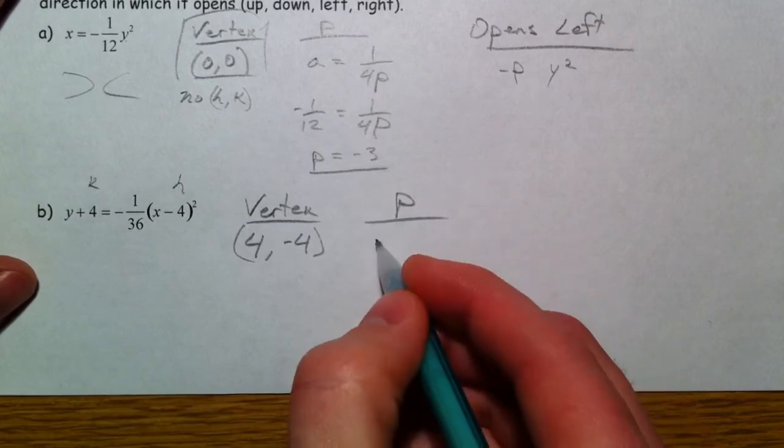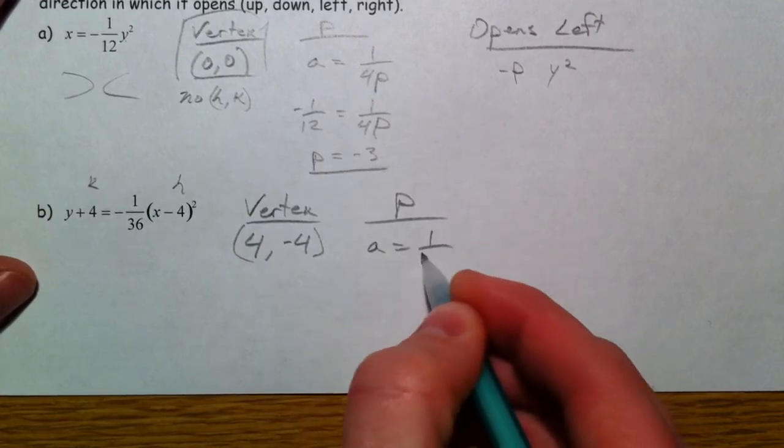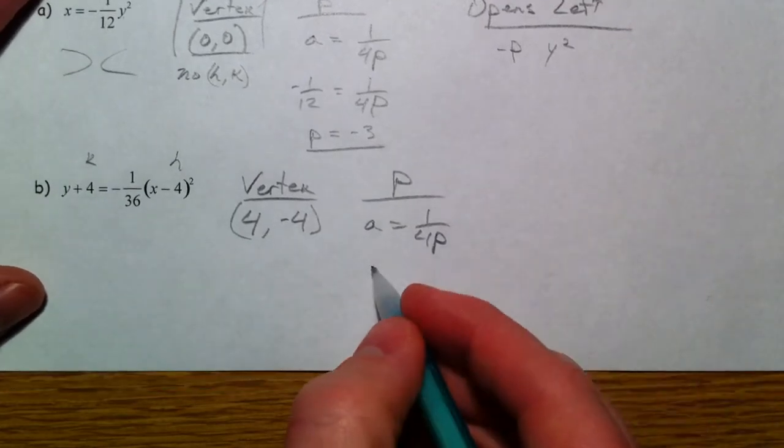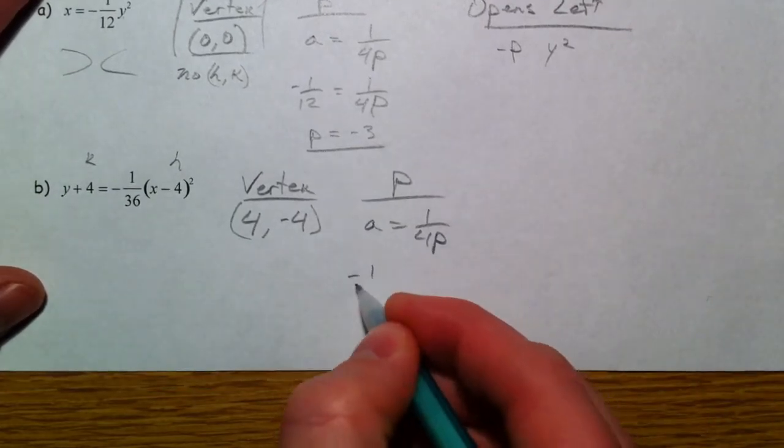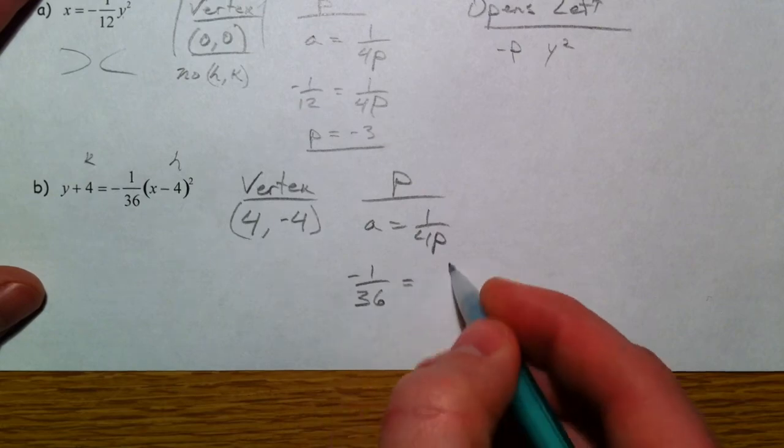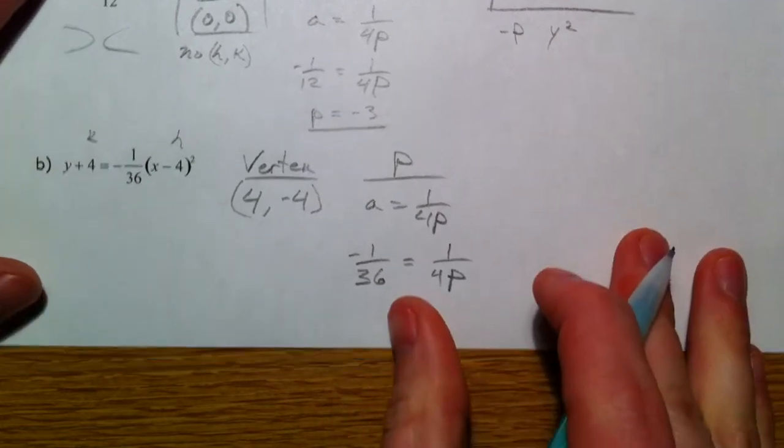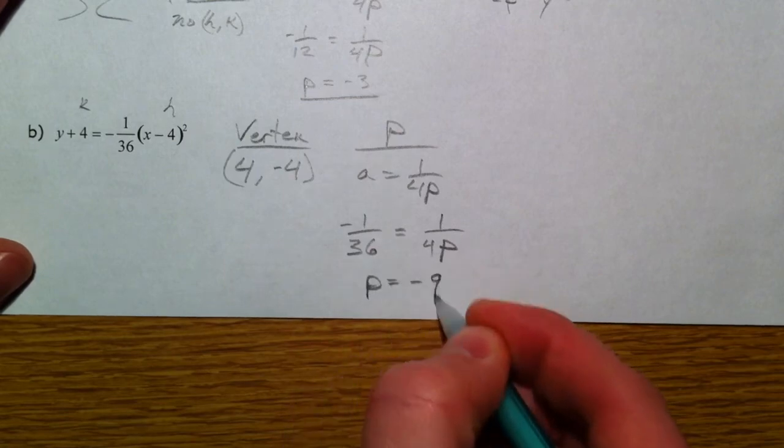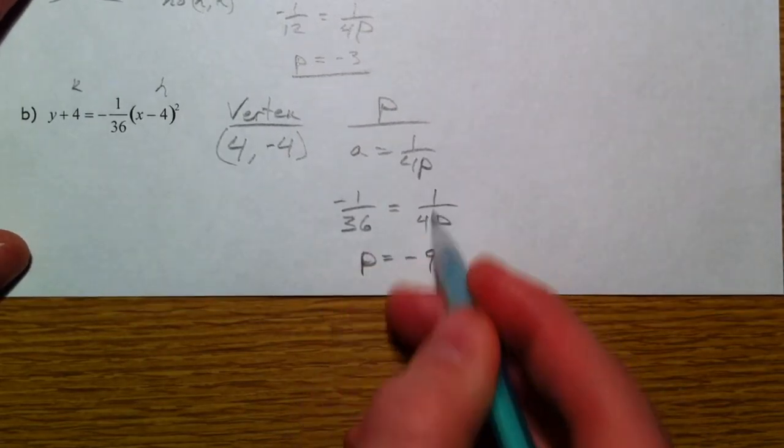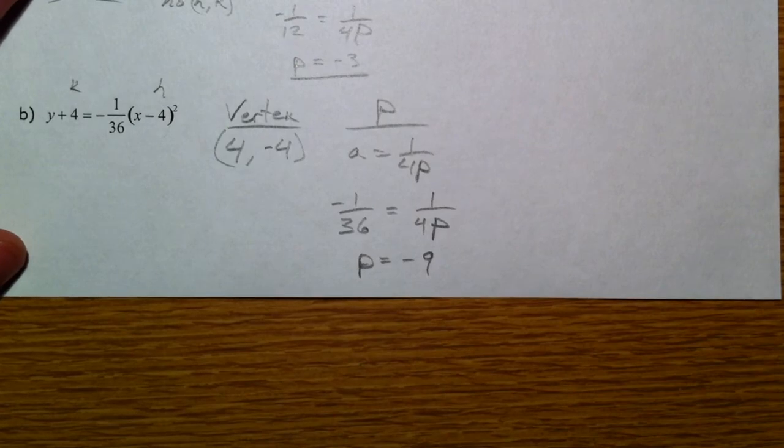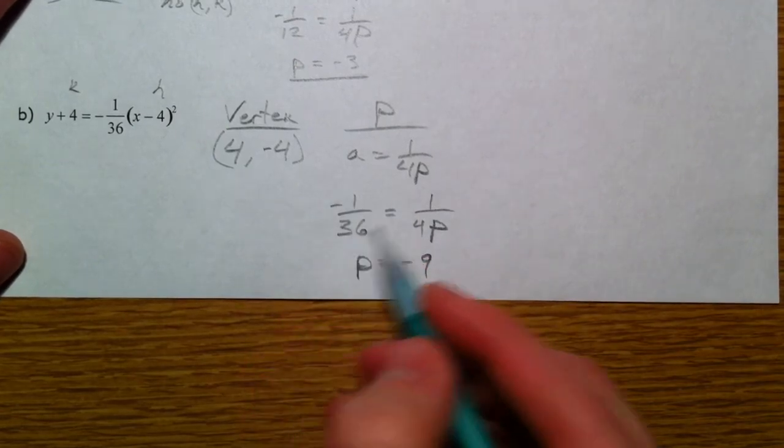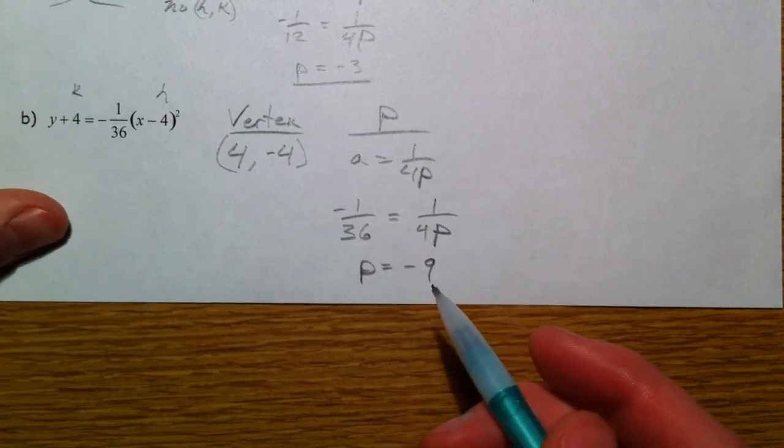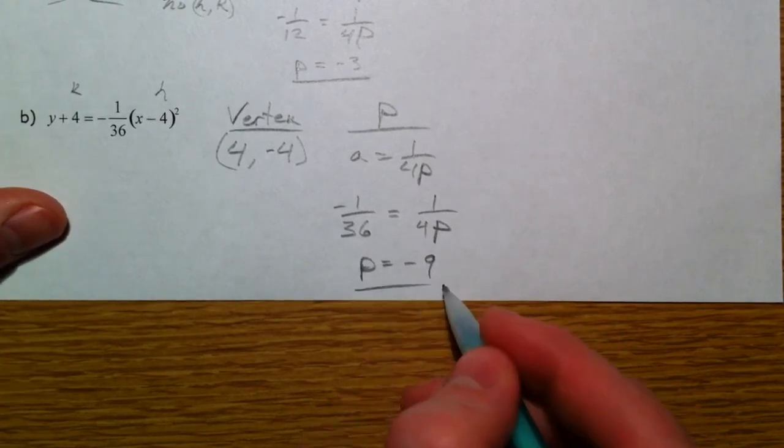The p value. Again, a equals 1 over 4p. And so we get negative 1 over 36 equals 1 over 4 times p. And so again, 4 times what is negative 36? p has to equal negative 9. You can cross multiply that if the equation gets a little more complicated. You get negative 4p equals 36. Divide both sides by 4. Where you get negative 9. And so p equals negative 9.